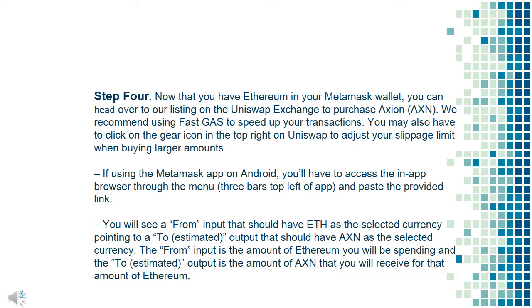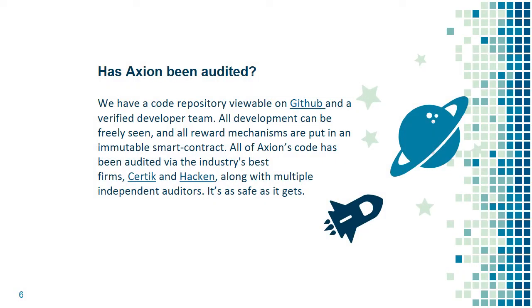You will see a 'from' input that should have ETH as the selected currency, pointing to an estimated output that should have AXN as the selected currency. The 'from' input is the amount of Ethereum you will be spending, and the estimated output is the amount of AXN that you will receive for that amount of Ethereum. Has AXN been audited?